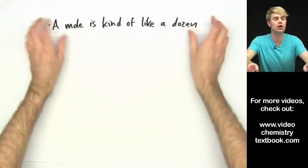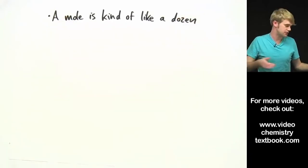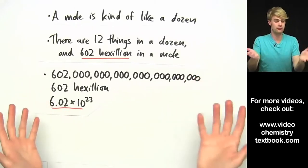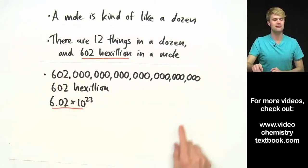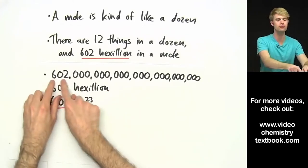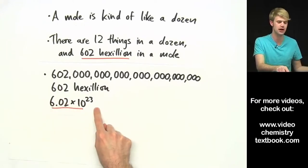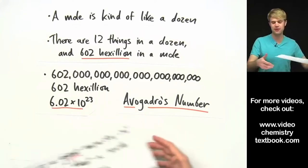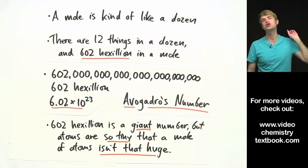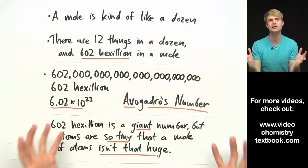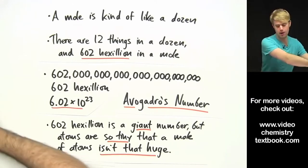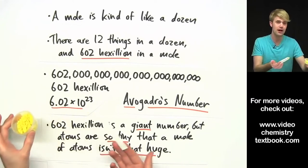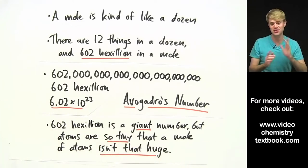So to review: a mole is kind of like a dozen except there are 12 things in a dozen and 602 hexillion things in a mole. We can write this number as 602 with 21 zeros, call it 602 hexillion, or most commonly abbreviate it in scientific notation as 6.02 × 10²³. This number is often referred to as Avogadro's number. And a mole of atoms doesn't take up that much space because atoms are so incredibly small that a giant number of them just isn't that big.